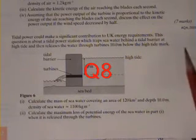Question 8 says it's about tidal power, but really it's just a question about potential energy. The first part asks to calculate the mass of seawater covering an area of 120 km² and depth 10m.